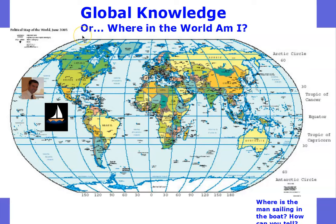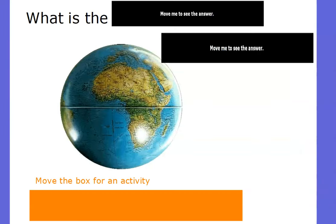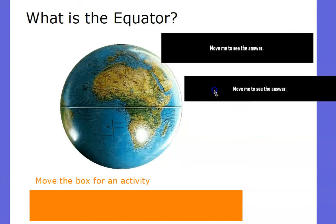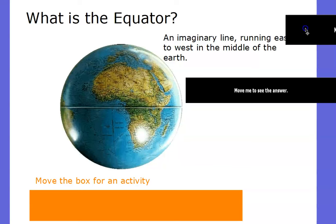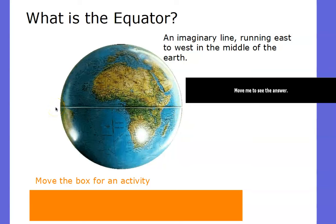Today's global knowledge map skills lesson is all about lines of longitude and lines of latitude that help people understand where they are anywhere in the world. The first question is: what is this line right here — the line that cuts the globe in half? It's called the equator. The equator is an imaginary line that runs from east to west in the middle of the earth.